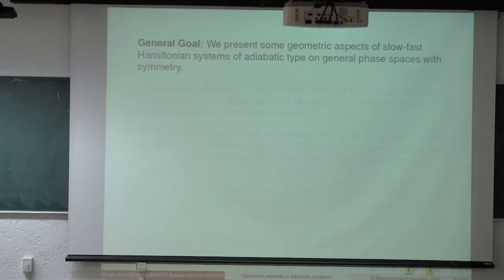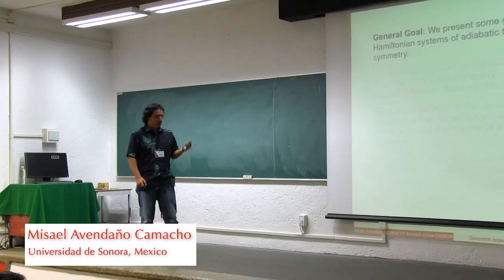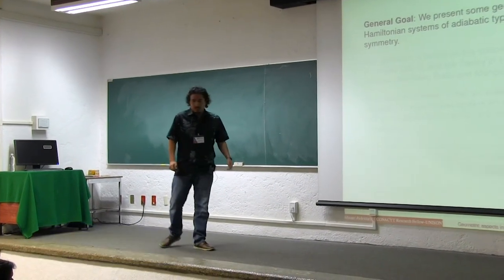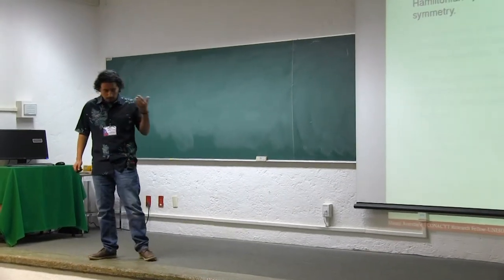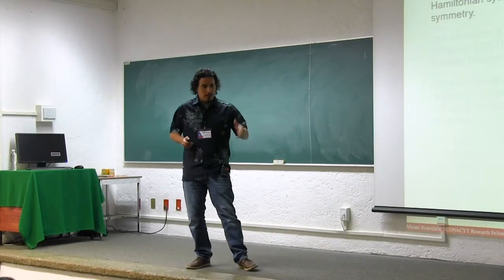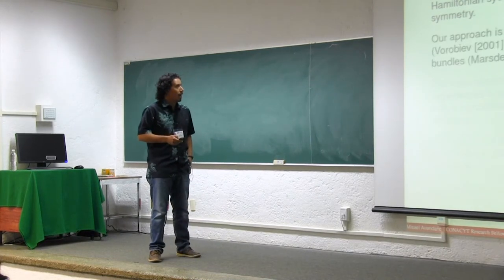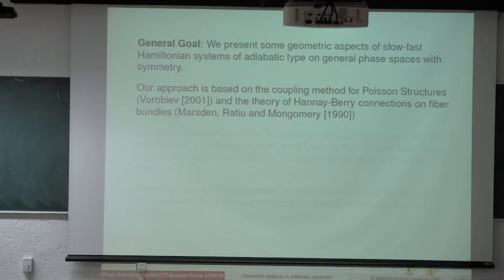The general goal is to present some geometric aspects of the slow Hamiltonian systems of the adiabatic time on general phase spaces with symmetry. The results I want to present are the product of several joint works with Jose Antonio Vallejo and Juro Biot on computing higher order corrections for slow-fast Hamiltonian systems. Our approach is based on the coupling method for Poisson structures, introduced by Boroviev, and the Hannay-Berry connections on fiber bundles, developed by Marsden, Ratiu and Montgomery in the paper 'Reduction, Symmetry and Phases in Dynamics.'